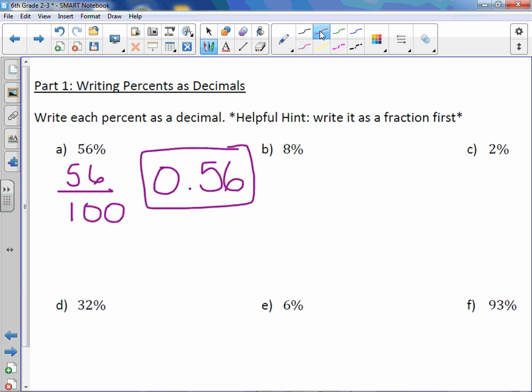So let's try B. 8% is 8 over 100. Do not reduce. When we're writing as a decimal, we want it to be in a power of 10, and 100 is a power of 10. So 8 hundredths would be 8 in the hundredths place.